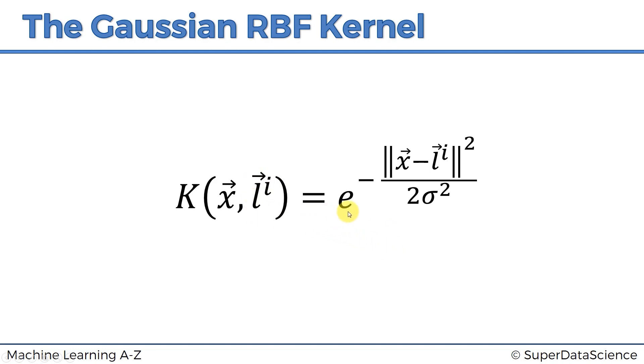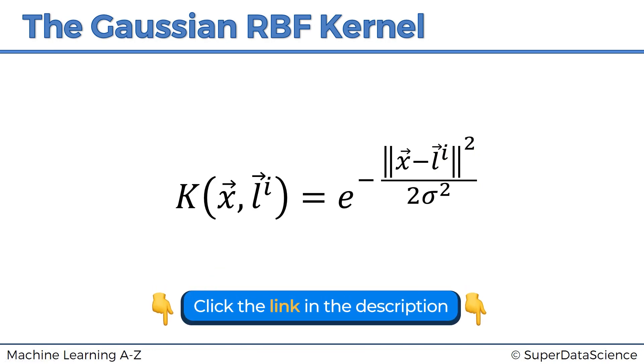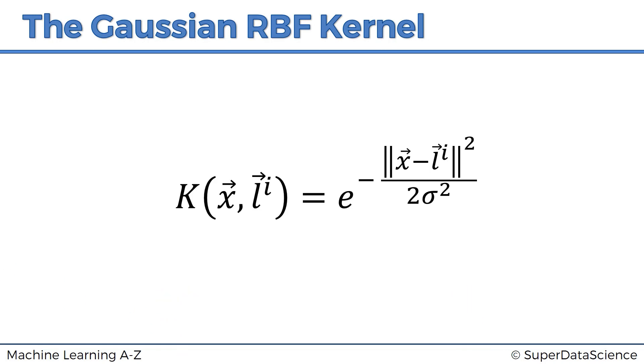That equals an exponent to the power of minus—the double vertical lines mean the distance between x and the landmark squared, divided by 2σ². I know this might all seem very confusing right now. What does this even mean? Well, let's explore this through a visual example.